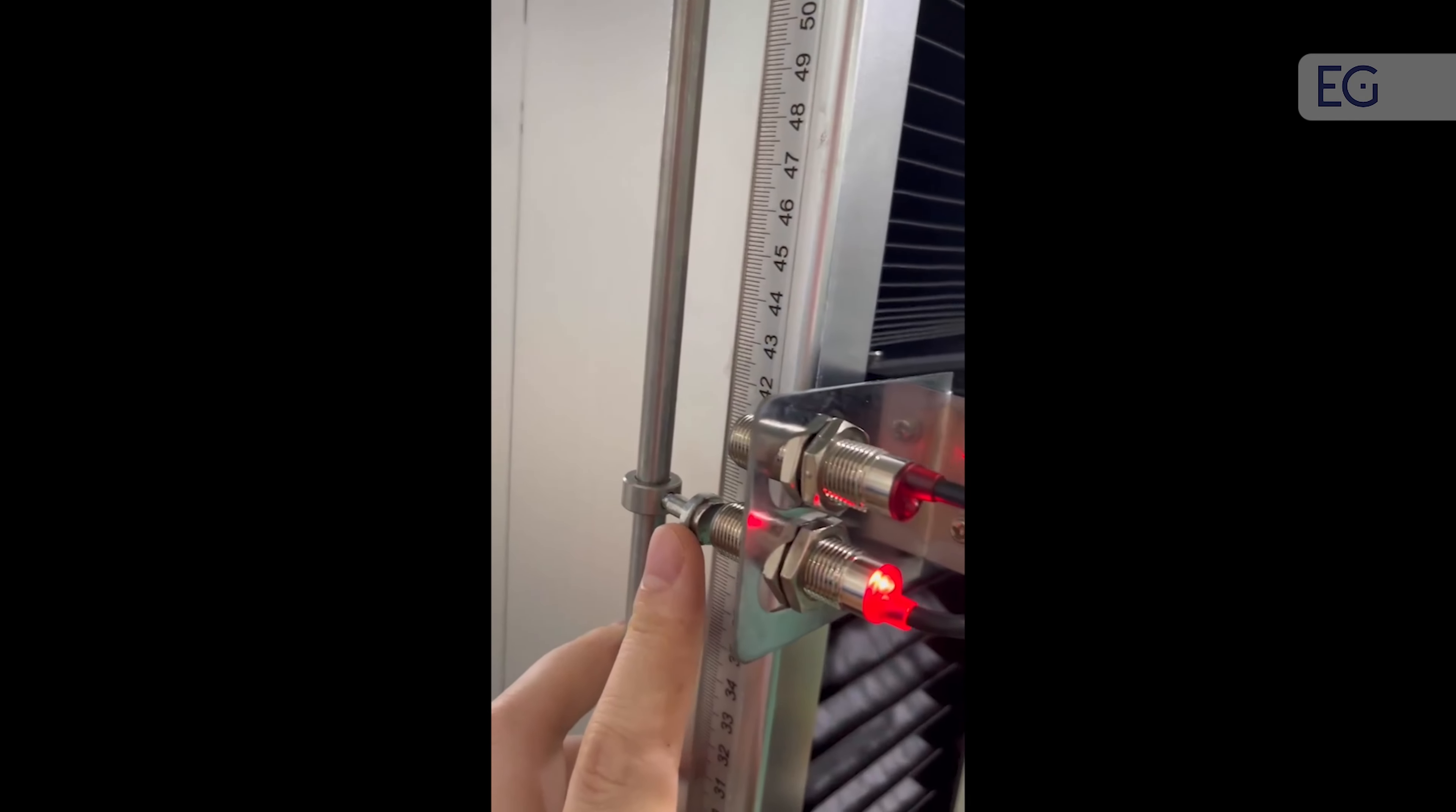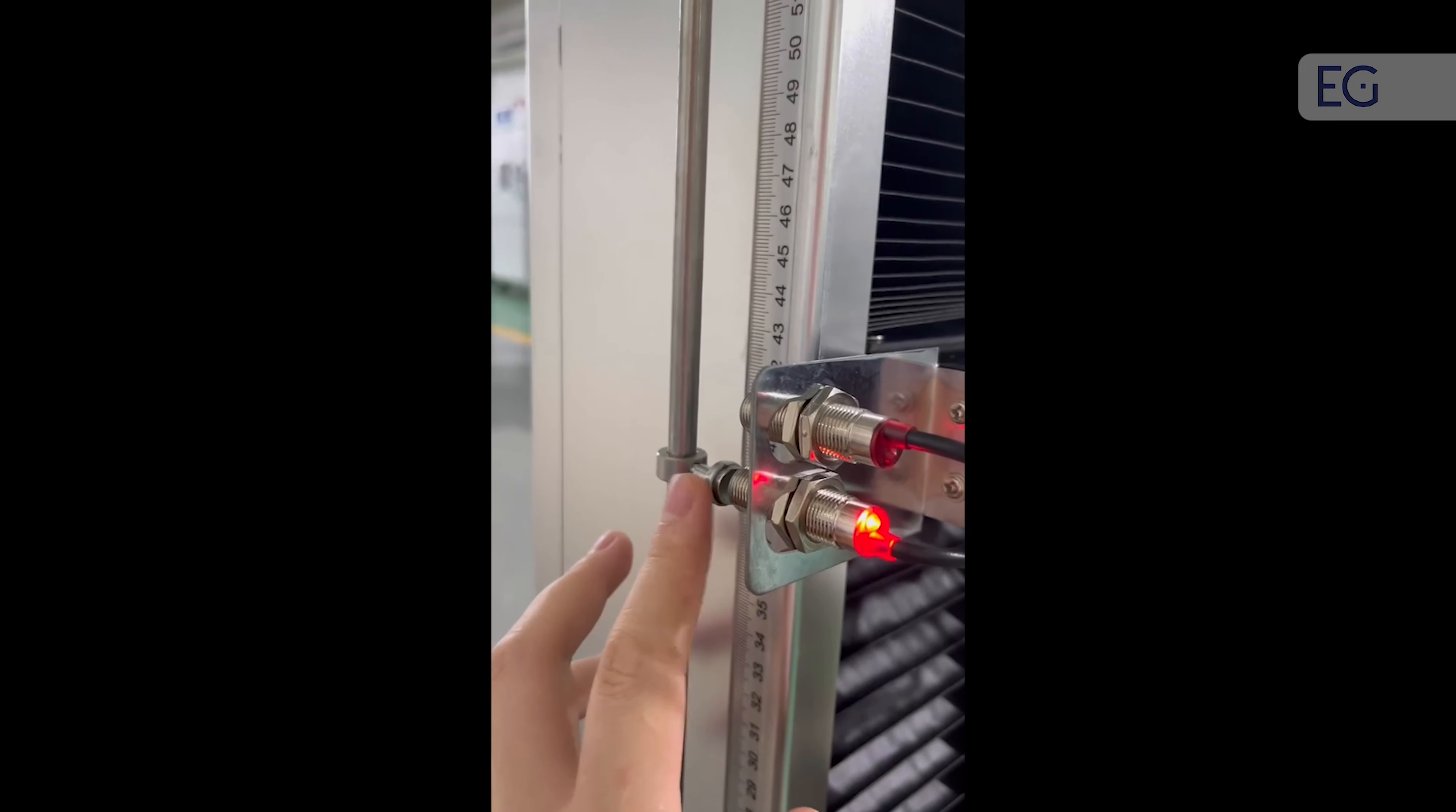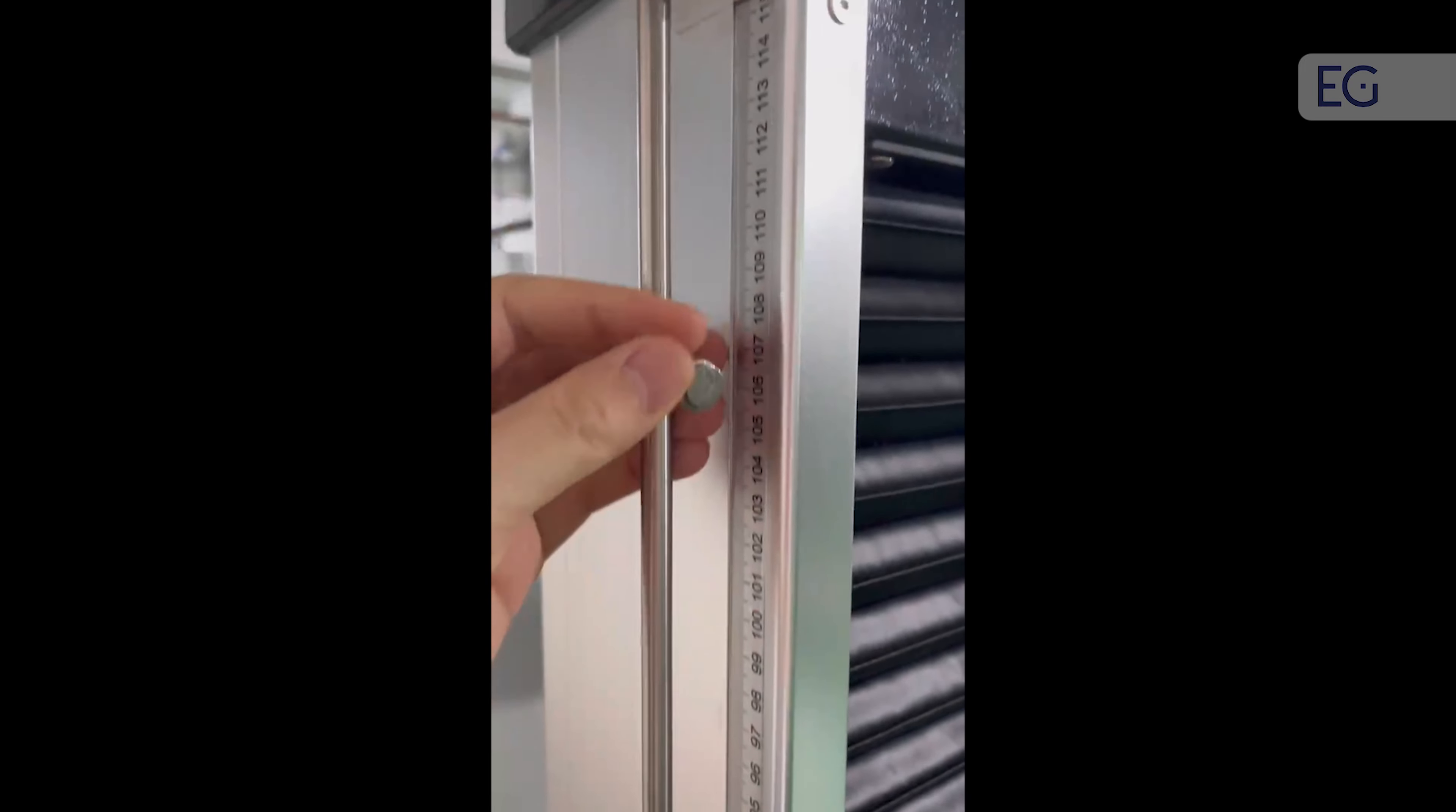Before we use the machine, we need to adjust this limit switch. There are two limit switches, lower and upper, to adjust the position.